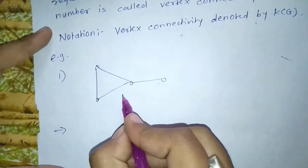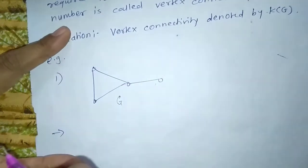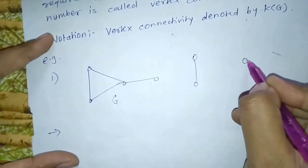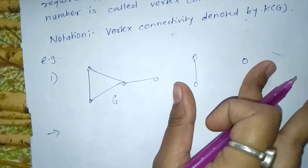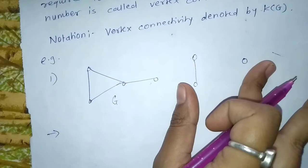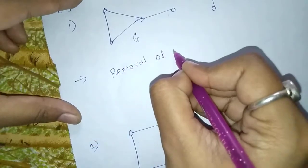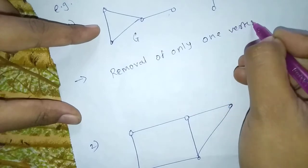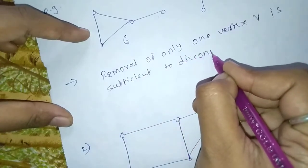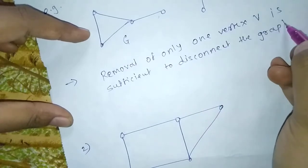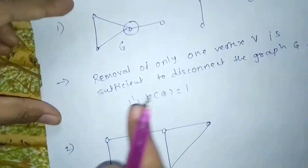For example, consider this graph. You can observe that when we delete this vertex you get a disconnected graph — it looks like two separate components. This is a disconnected graph when we delete this vertex. So, vertex connectivity is equal to 1, because here we delete only one vertex. Removal of only one vertex V is sufficient to disconnect the graph G. Therefore, K of G is equal to 1.